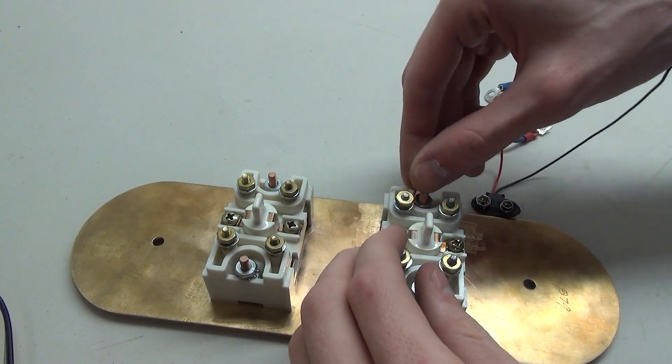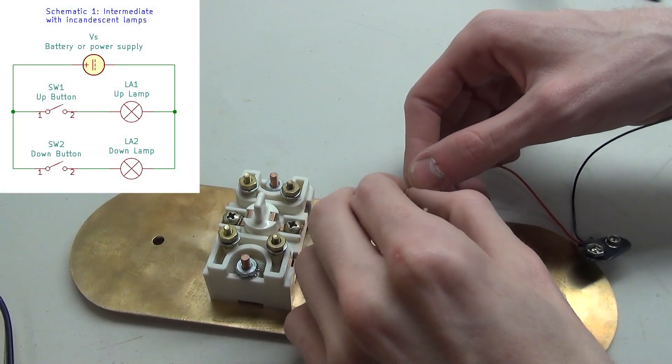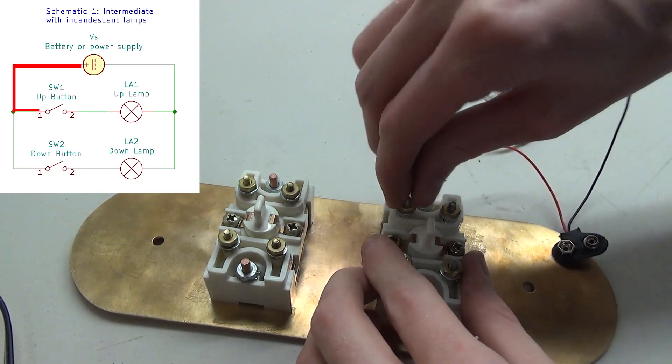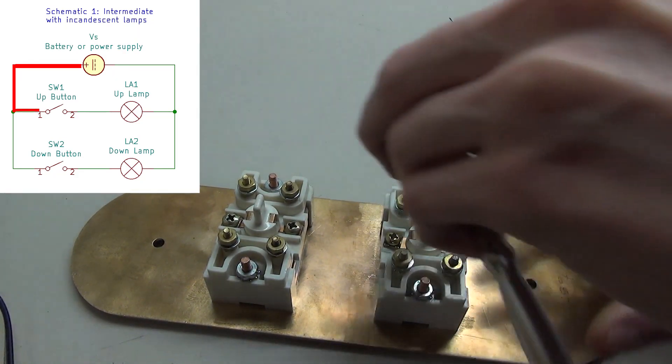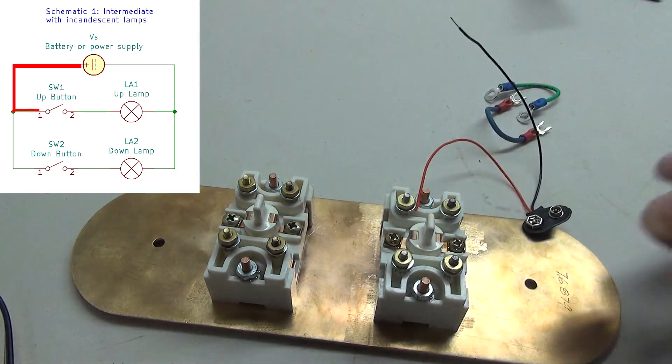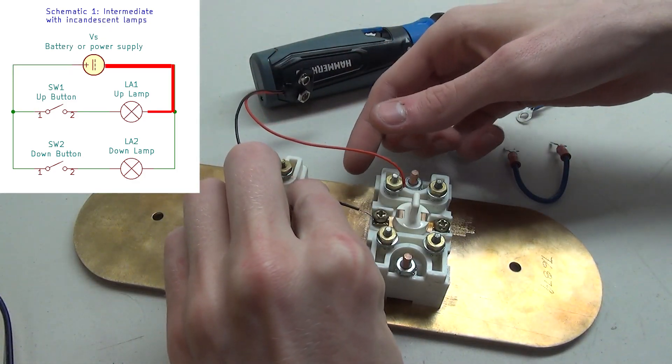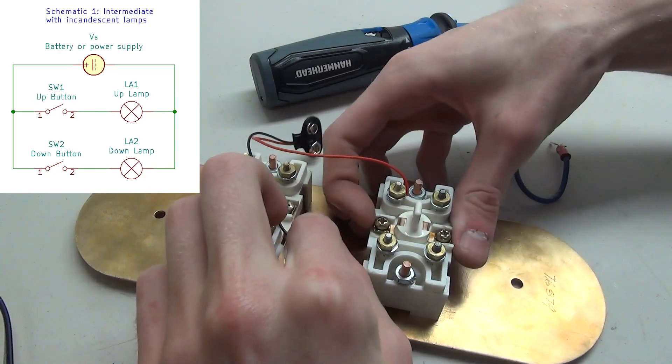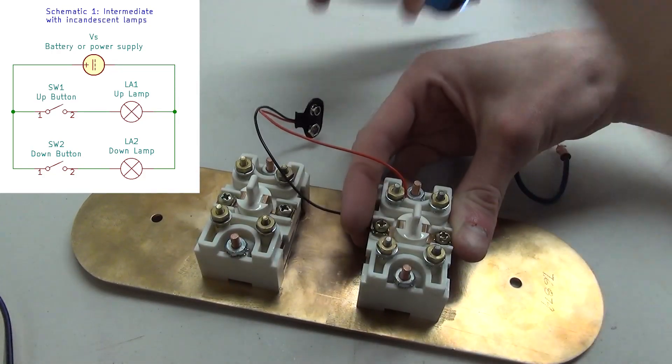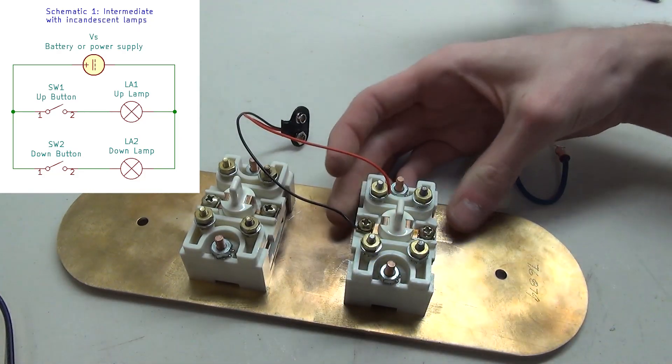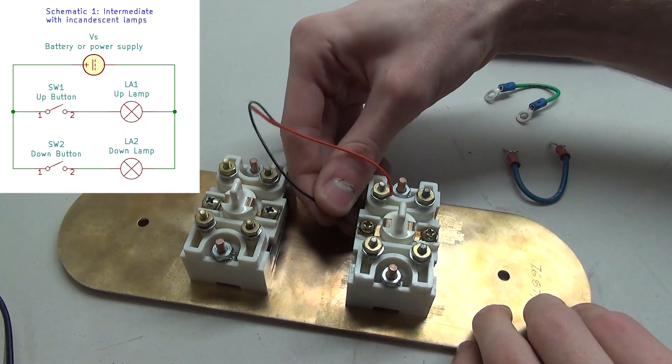The first step is to connect the positive end of your voltage source, in my case the battery, to one of the ends of the contacts of the button. In this case you can see it's the top left. Then the negative end gets connected to one end of the lamp. For this method the polarity doesn't really matter because it's an incandescent bulb, but when we do method two with the LED it does matter, so just hook it up to this end for now.